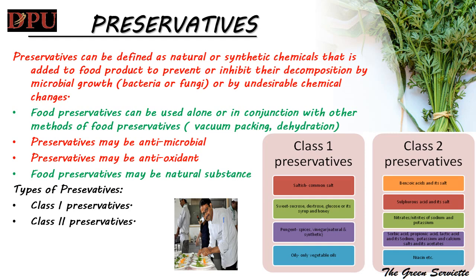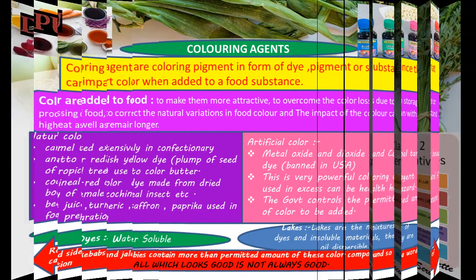2. Benzoic acid: used in non-alcoholic wines, squashes, crush, fruit syrups, cordial, barley water, jam, marmalade, preserved canned cherry, fruit jelly, tomatoes and other sauces. 3. Sodium or potassium nitrate (saltpeter): used in cooked pickled meat including ham and bacon. 4. Ascorbic acid including its salts: used in cheese or processed cheese, smoked fish, paneer, fat spreads, canned fruit prunes.